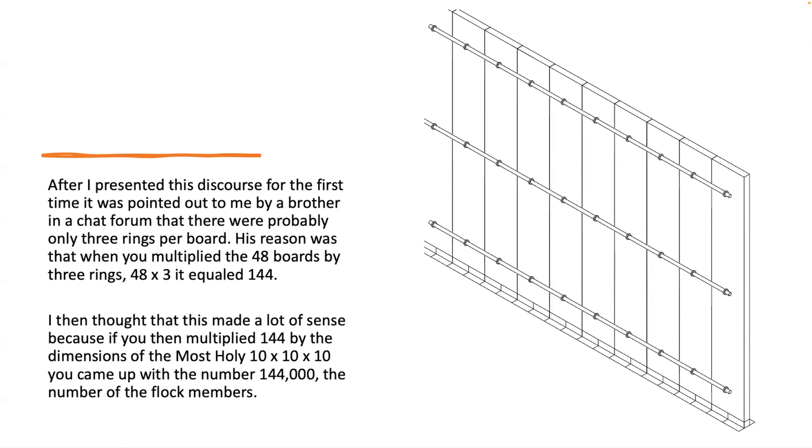Then I thought that this made a lot of sense, because if you multiply 144 by the dimensions of the Most Holy—ten by ten by ten—you come up with the number 144,000, the number of the little flock members.